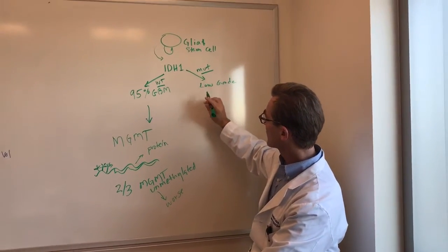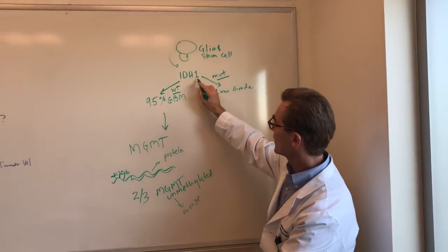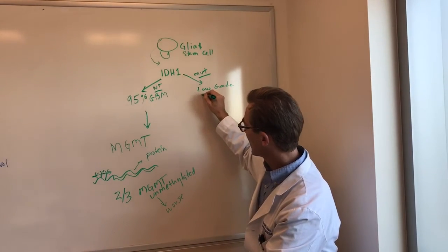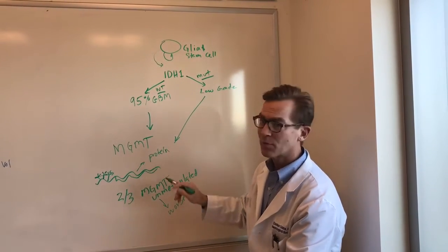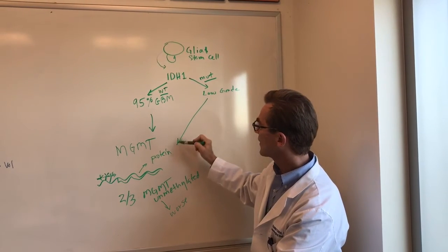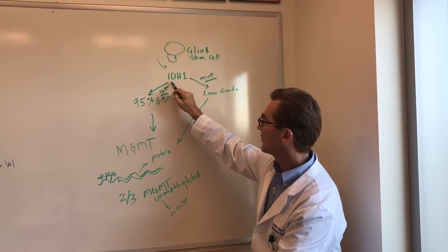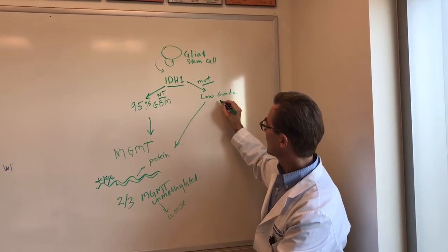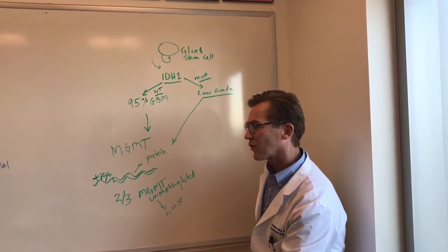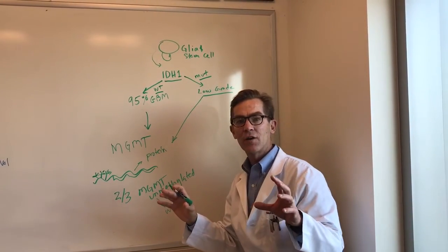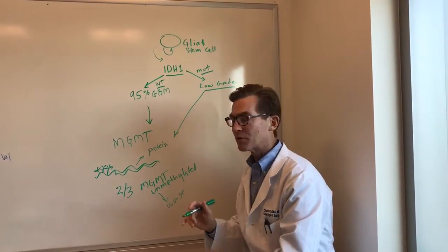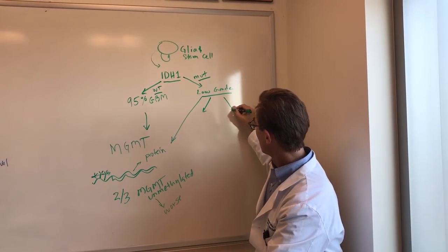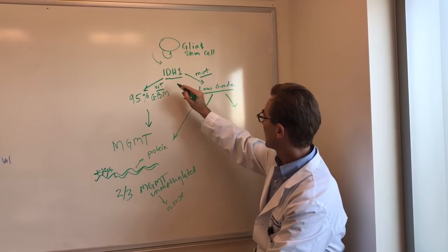So what about the tumors that start out as low grades that are IDH1 mutated? Well, we know these are going to do better, but some of them will actually end up over time becoming glioblastomas, but they get to that point more slowly because they have this good prognostic marker. Sometimes we look at these low-grade tumors, and we try to figure out if they are astrocytomas or oligodendrogliomas, and these can be broken down into two more categories, essentially by looking at their IDH1 mutation.